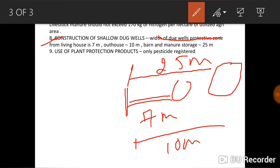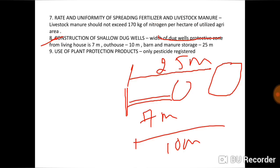The last rule provided by GAP relates to pesticides: only registered pesticides should be used. No unregistered pesticides should be used, as they are harmful to crops, water sources, and human consumption. Just as GMP provides rules for manufacturing processes, GAP provides rules related to agricultural practices. These are the rules to keep in mind.